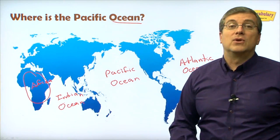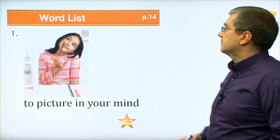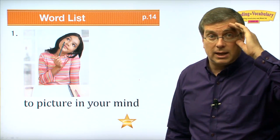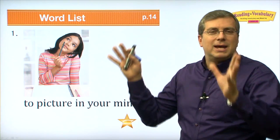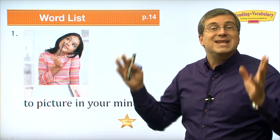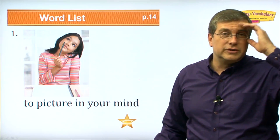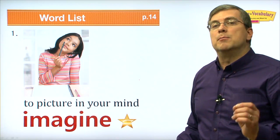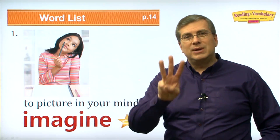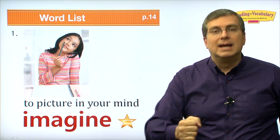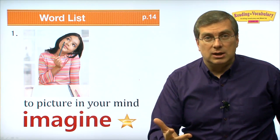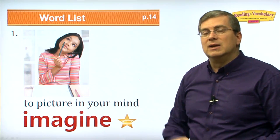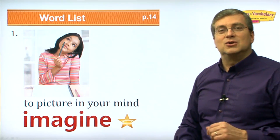Let's learn some vocabulary about the Pacific Ocean. First vocabulary word: to picture in your mind. You have many pictures in your mind. If you think about something, you can make different pictures — some ideas come into your mind. What are you doing? You are imagining. To imagine. Three syllables: I-ma-gin. Put them together quickly: imagine. That's what it means to picture in your mind — to imagine.